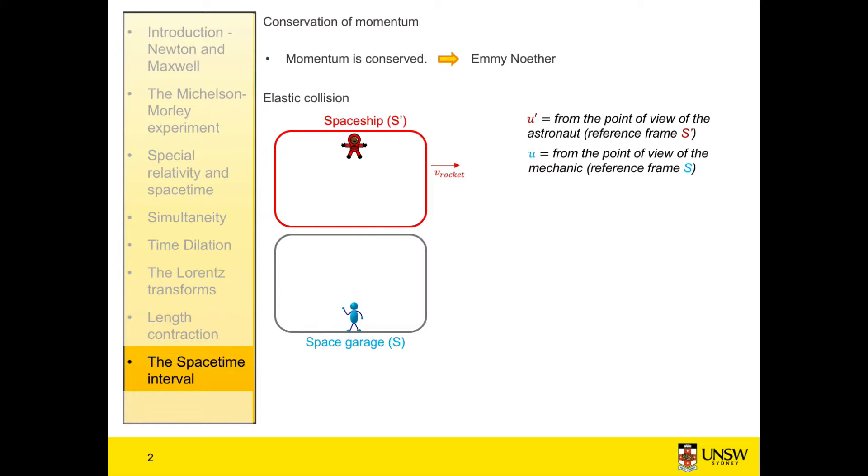We'll set up our collision. The astronaut throws a tennis ball, ball B, and the mechanic throws a tennis ball, which is ball A. The two balls are exactly the same, and both balls are thrown in the y direction with exactly equal and opposite velocities as measured in their rest reference frames, where the x velocities of the balls are zero.